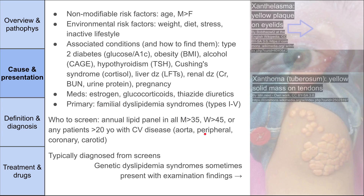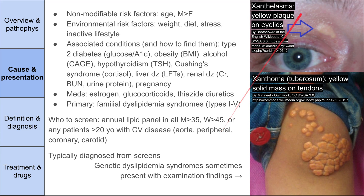The examination findings include xanthelasmas — yellow plaques on the eyelids, as you can see here. There are also xanthomas, with several subtypes. The one shown here is xanthoma tuberosum, which is a solid yellow mass on the tendons, visible on this person's knee. Again, these are typically only seen in the genetic familial dyslipidemia syndromes.